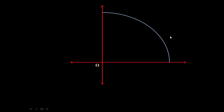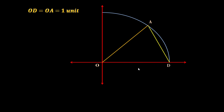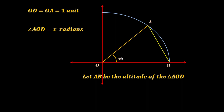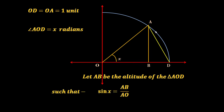If we focus in this quadrant, the diagram would look like this. Let us draw the radius of this quadrant and join these two points, naming them as A, O, and D, such that OD equals OA equals one unit, because this is the quadrant of a unit circle, and this angle AOD equals X radians. Now in this triangle AOD, if we draw an altitude AB perpendicular to OD,